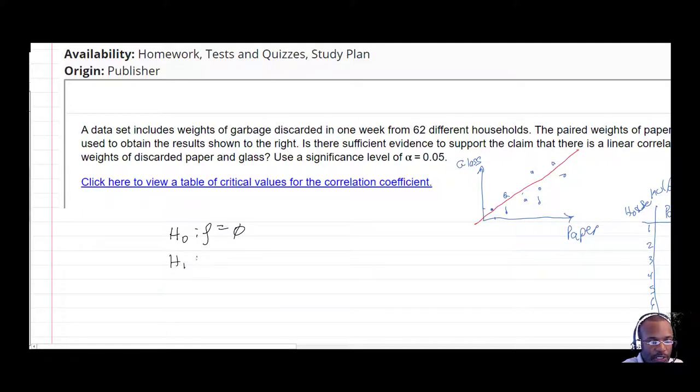And the alternative hypothesis is that there's some correlation. So if rho is equal to zero, then the correlation coefficient looks like this. And you just really get no, you have no ability to predict y from x when there's no correlation. So our alternative hypothesis is that there is correlation.